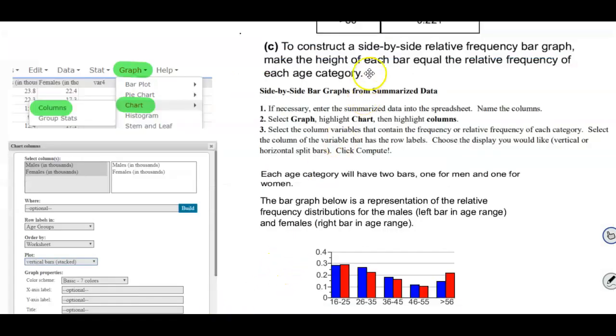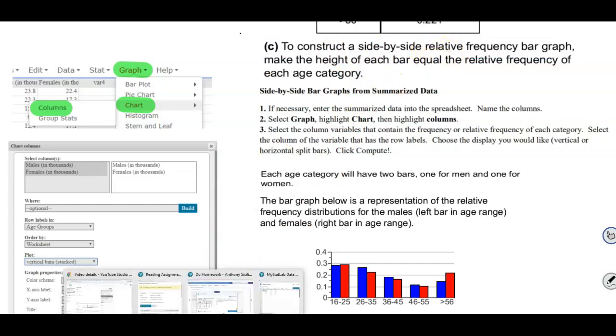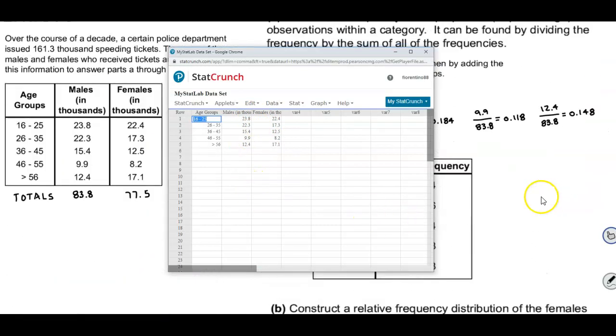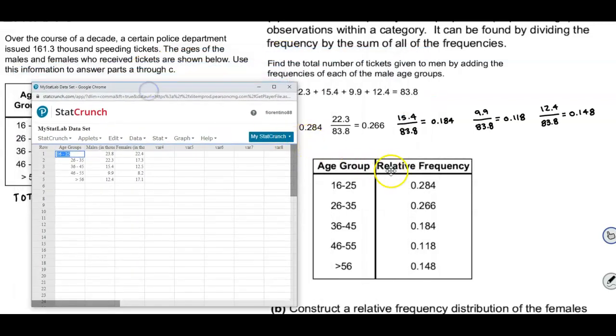Okay so we want to construct a side-by-side relative frequency bar graph. Now if you notice the numbers that are in here are from our regular data that we got at the beginning. What we want to do is create the relative frequency.